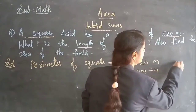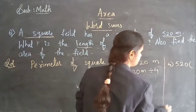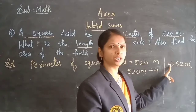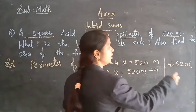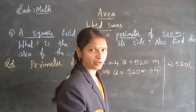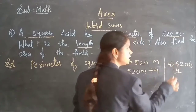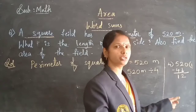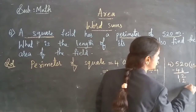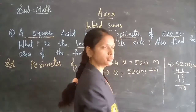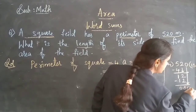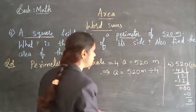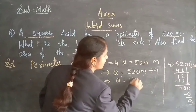Now let's do the division. 520 divided by 4. Whenever we do division, the first digit is compared with the divisor. 5 divided by 4 gives 1, remainder 1. Bring down 2, making 12. 4 times 3 is 12, remainder 0. Bring down the last digit 0. 4 times 0 is 0. So the side value A is 130 meters.